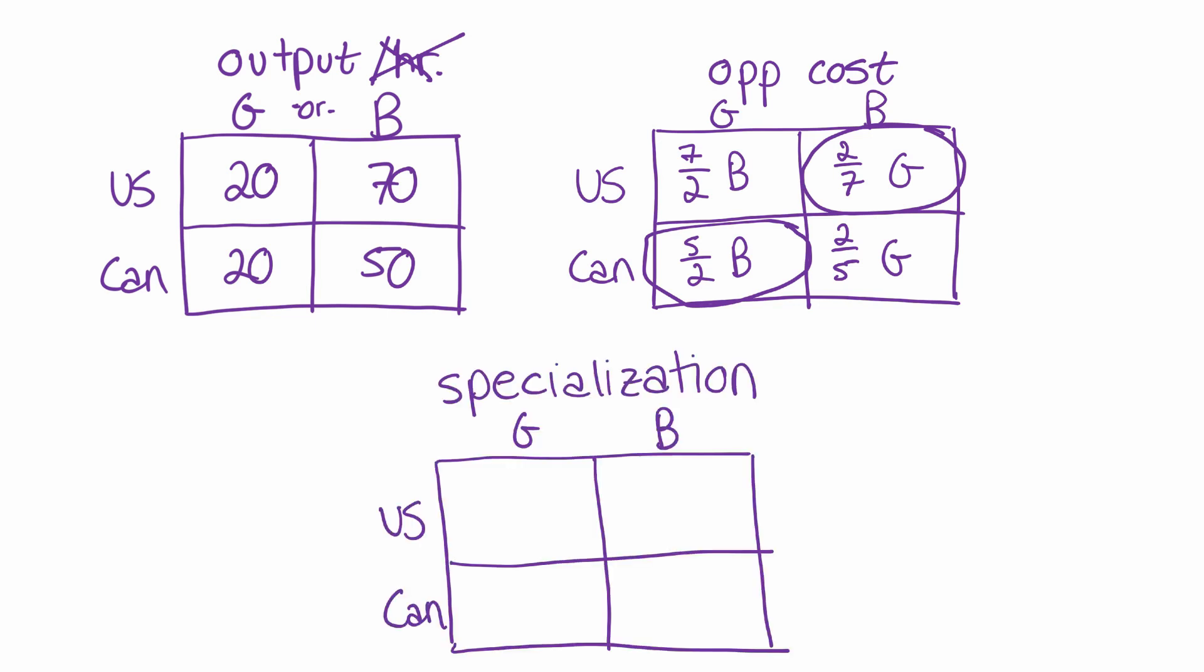We know that we get the potential for gains from trade when the parties involved in trade specialize according to their comparative advantage. So in this case, specialization would entail the US only making butter and Canada only making guns.